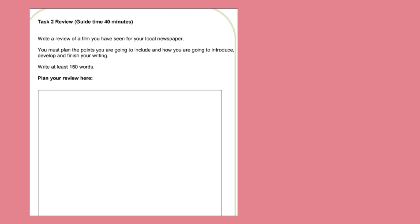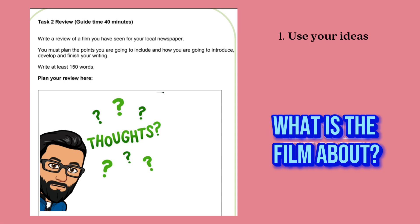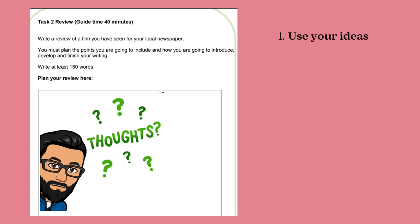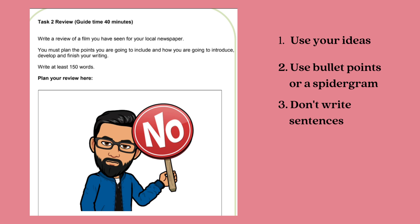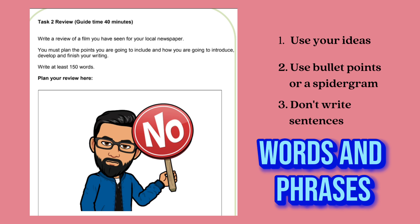When it comes to the plan, use your ideas. What film will you write about? What is the name of the film, what is it about, what is the story, what about the acting, did you like it, what did you like or not like, what lessons can we learn, would you recommend it to others? You have to list your ideas — a good idea would be to use bullet points or a spidergram. Don't write sentences in the plan, only write words and phrases. You will write sentences later in the actual writing part.